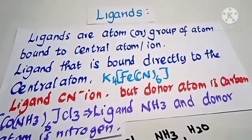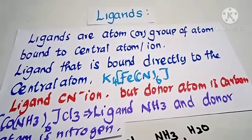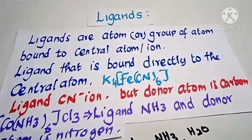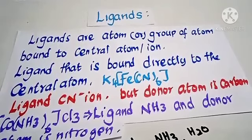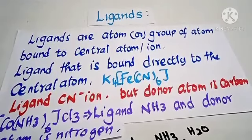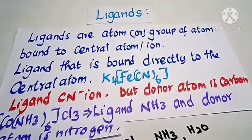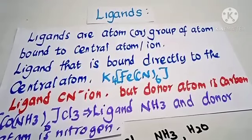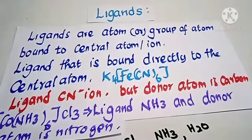Ligands are the atoms or groups of atoms bonded to the central atom or ion. A ligand can be a single atom, for example chlorine, or a group of atoms, such as ammonia or water. The ligand is bound directly to the central metal atom.